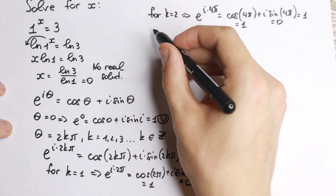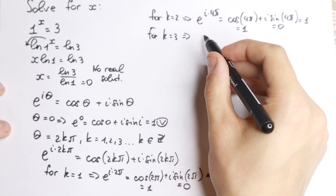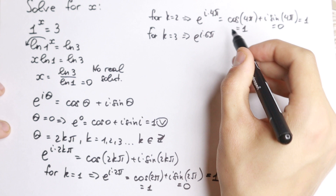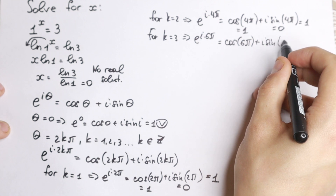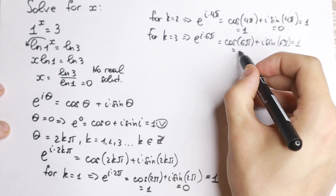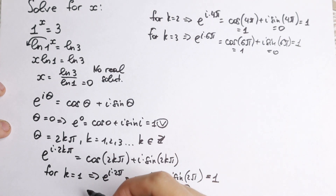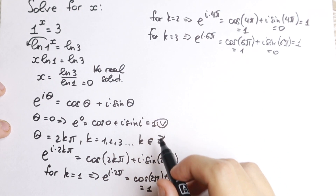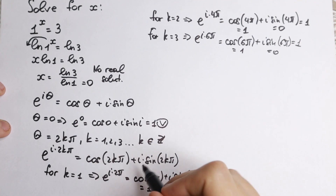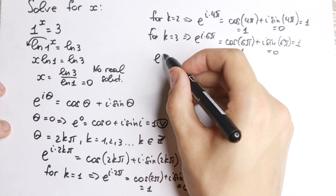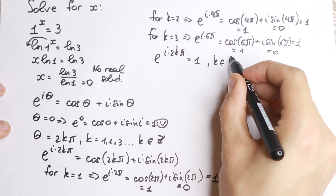For k equal to 3, we have e to the power i times 6 pi equal to cosine 6 pi plus i sine 6 pi, which also equals 1, because cosine 6 pi equals 1 and sine 6 pi equals 0. A lot of students ask me why I do this explanation for k equal to 1, 2, and 3. Because right now, if you look closely, it doesn't matter which integer k you choose — due to the period, e to the power i times 2k pi equals 1 for all integers k.